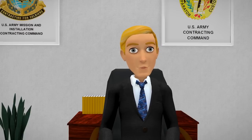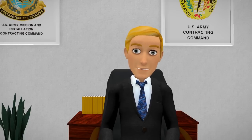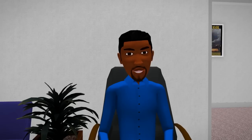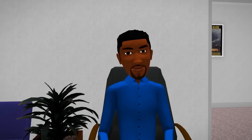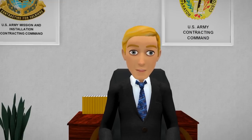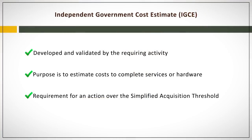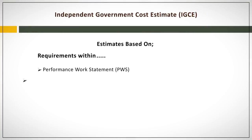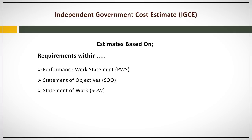The simplified acquisition threshold means a specific dollar value which is set and defined within FAR 2.101, along with the applicable exceptions. I will make sure to research this when I get back to my desk. Good. So when the requiring activity creates the IGCE, they will base their estimate on the requirements within the performance work statement, statement of objectives, statement of work, or the item description.